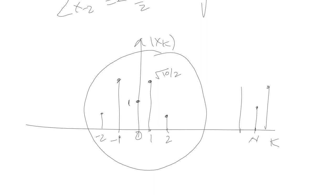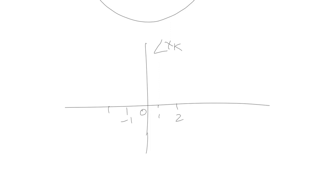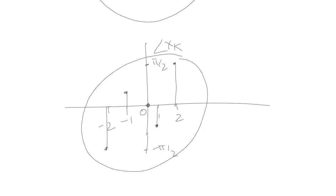For the phase spectrum: the phase of X[0] = 0; the phase of X[1] = −tan⁻¹(1/3); the phase of X[−1] = tan⁻¹(1/3); the phase of X[2] = π/2; the phase of X[−2] = −π/2. The phase spectrum repeats after N intervals as well. This completes the first example.